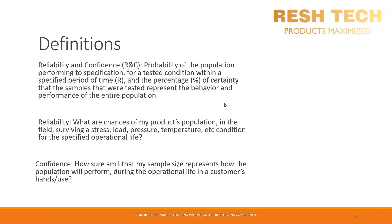Let's define reliability and confidence, which are key parameters in defining a sampling plan and are used primarily in design verification and validation sample size determination. Reliability and confidence is the probability of the population performing to specification for a tested condition within a specified period of time, and the percentage of certainty that the samples tested represent the behavior and performance of the entire population. In simpler terms: for reliability, what are the chances of my product's population in the field surviving a stress, load, pressure, temperature, or other condition for the specified operational life? With confidence, we ask how sure am I that my sample size represents how the population will perform during the operational life in a customer's hands?